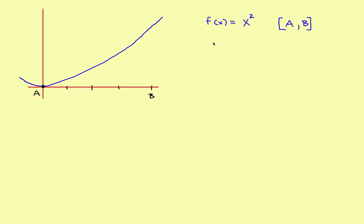Let's take a look at the midpoint rule for finding or approximating the areas under curves. This will be a little bit easier if we pick a particular example, so we'll pick one that's fairly straightforward: f of x is equal to x squared. And just to give it a number, let's find the area under the curve between 0 and 2.